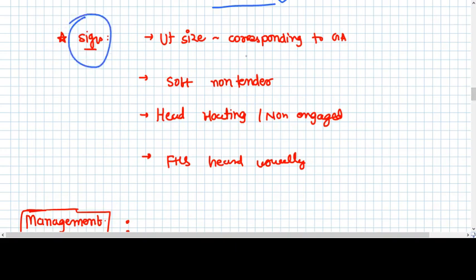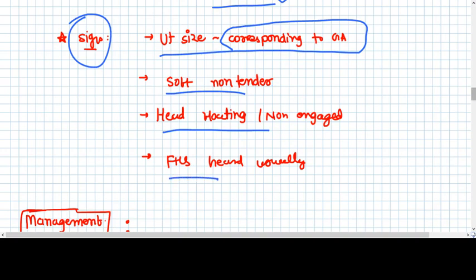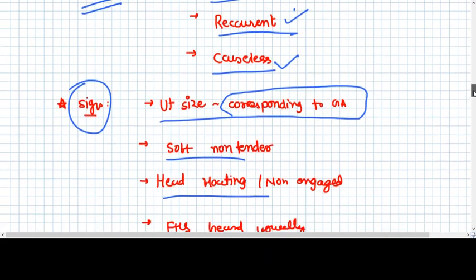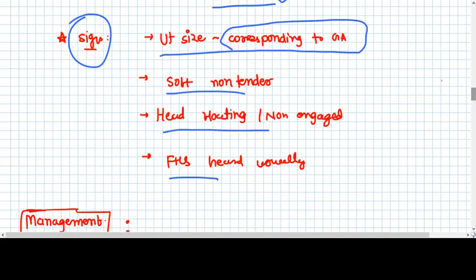What are the signs? Uterine size is compensated with gestational age. Soft, non-tender uterus. Head is floating because placenta is in lower uterine segment and it is not very easy to get engaged into the pelvis. Fetal heart is normally heard. Fetal outcome is not very bad.